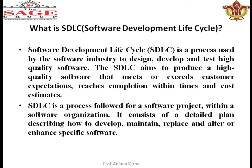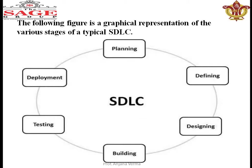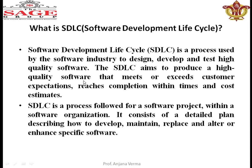The first important topic of unit one is SDLC. The full form of SDLC is Software Development Life Cycle. It is a process used in the software industry to design, develop, and test high quality software. The aim of SDLC means to produce a high quality software that meets or exceeds customer expectations and reaches completion within time and cost estimation.